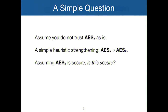Assume that you are slightly paranoid and you don't want to use AES as is. You would like to increase its security in perhaps the simplest way possible by composing it with itself with the same key. We are assuming you don't want to use more entropy, so it's just a single key. This is a black-box thing, so you don't need to worry about changing the key schedule. Assuming AES is secure by itself, is this construction actually secure? You would expect that it is, but can you prove it and bound exactly how secure it would be?